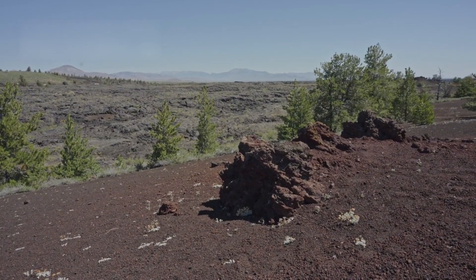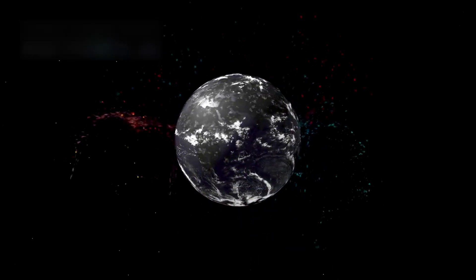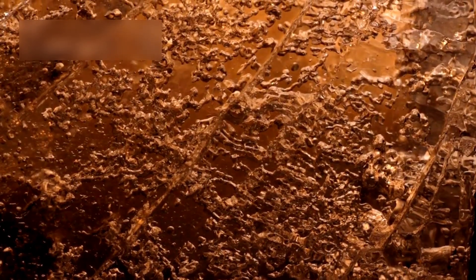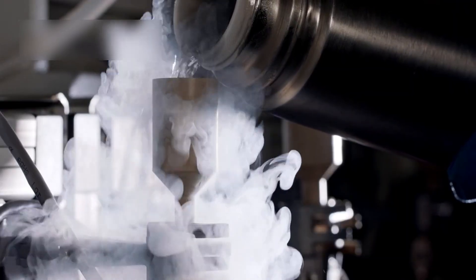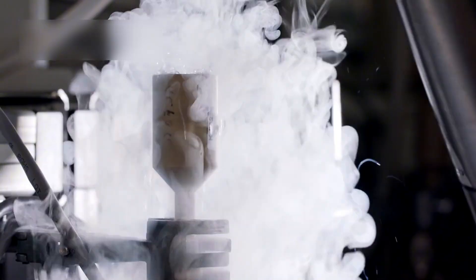Triton, Neptune's moon, was hiding ice volcanoes all along. This moon shocked experts with its wind speeds and frozen gas. The images showed a world colder than any place on Earth. The surface temperatures dropped to minus 235 degrees Celsius, freezing nitrogen.